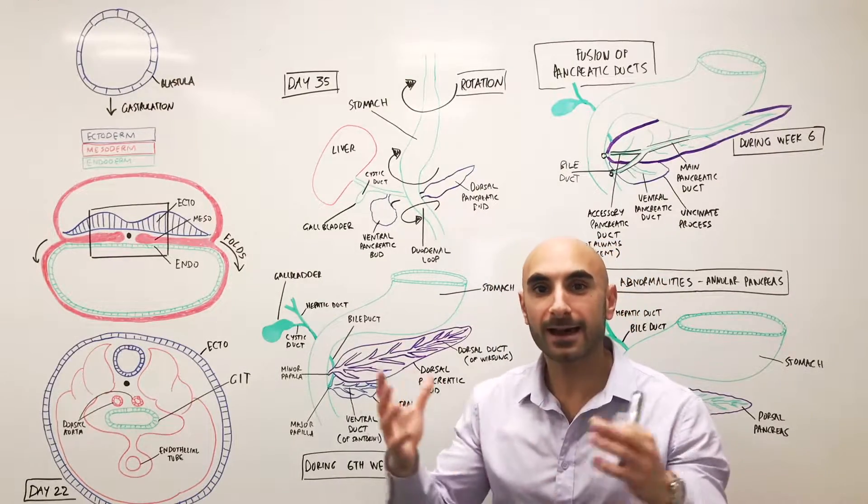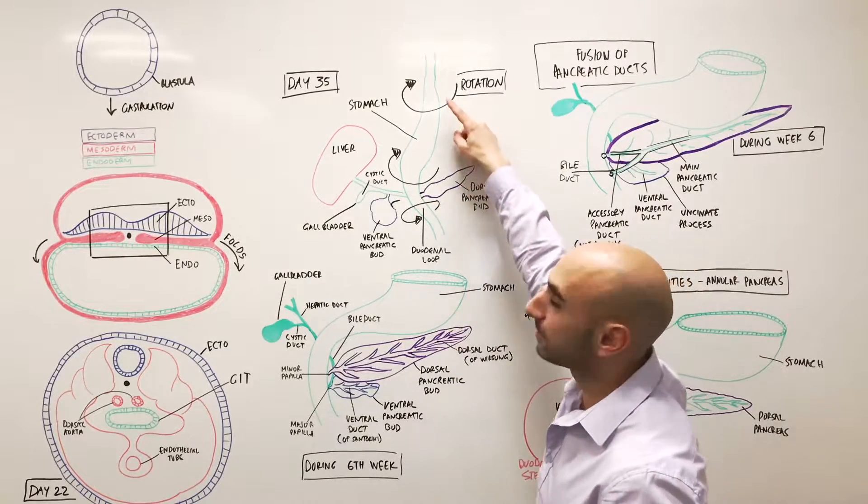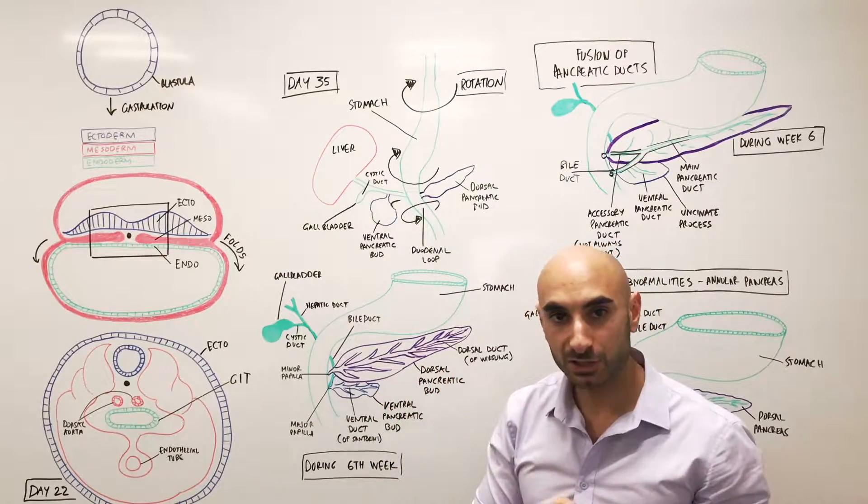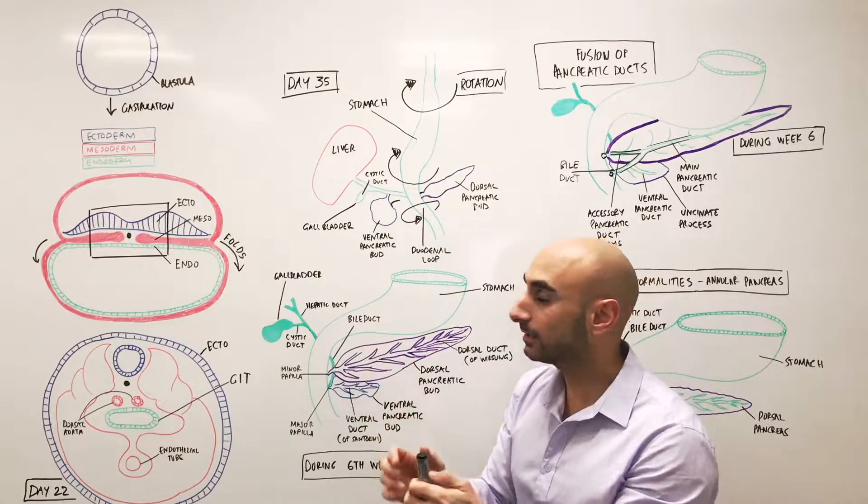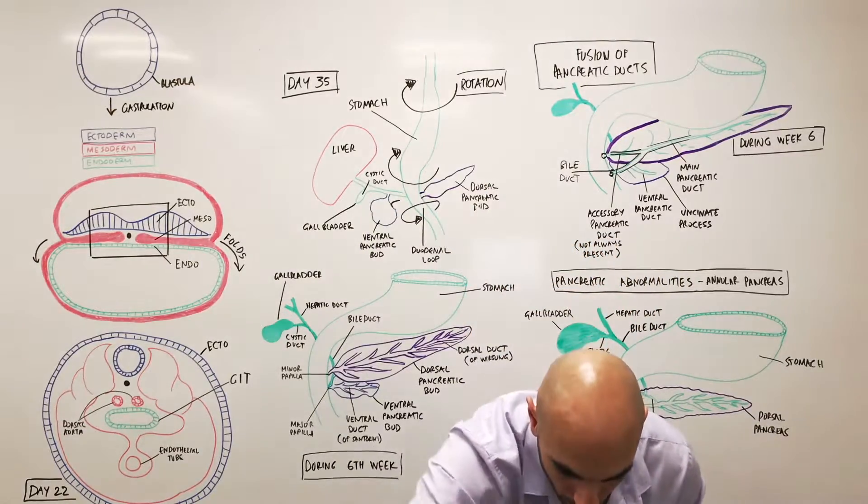Okay. With that said, how does it become one pancreas? What happens is that the GIT, the stomach, rotates to sit in its final position. As it is rotating, and the direction that it's rotating, if you're looking from the top, is clockwise.